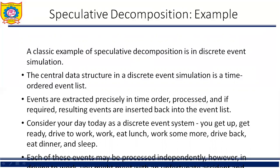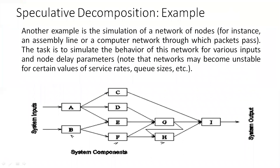That is the problem with speculative decomposition. Another example is the simulation of a network of nodes — for instance, an assembly line or a computer network through which packets pass. The task is to simulate the behavior of this network for various inputs and node delay parameters. Note that networks may become unstable for certain values of rates, queue size, etc. This is a speculative decomposition example: simulation of a network of nodes.